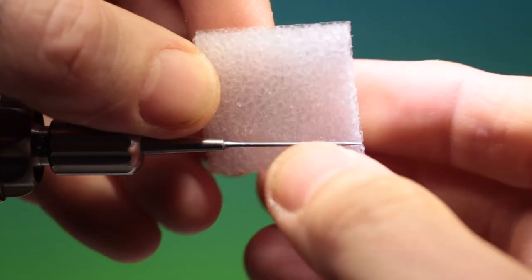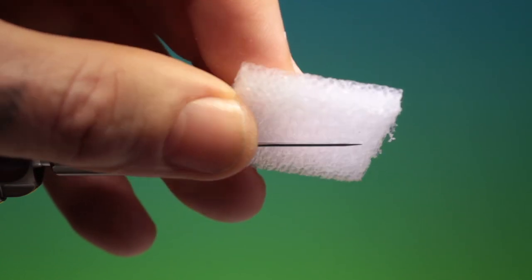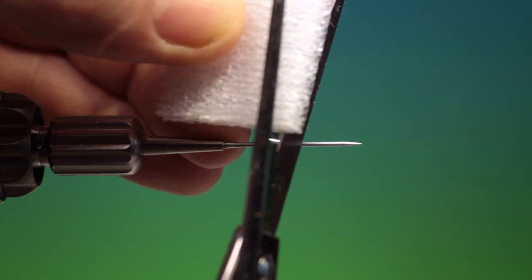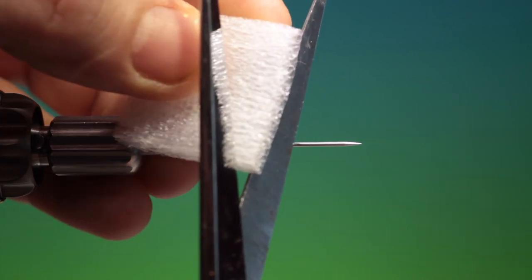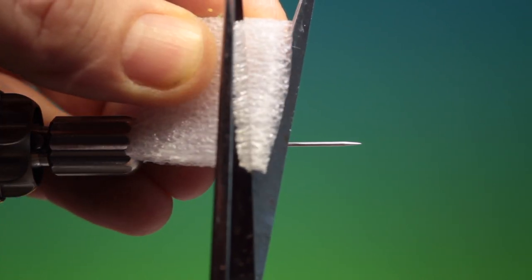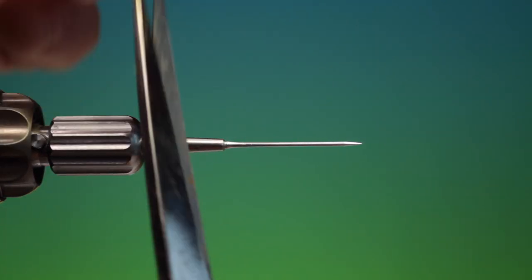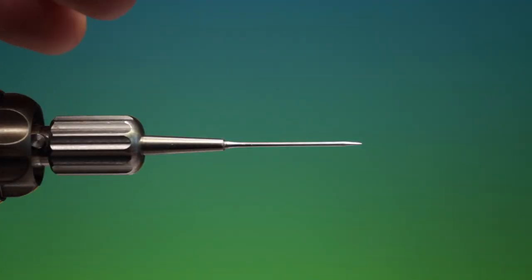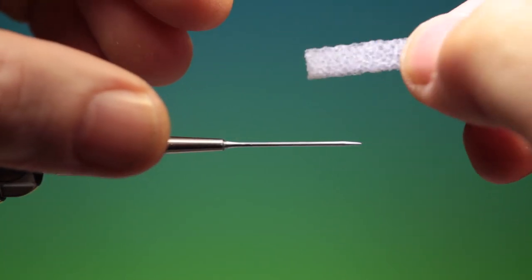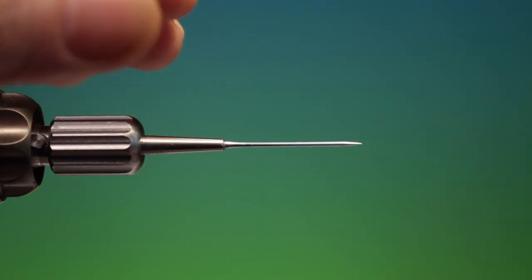So what we want is this open cell foam and all we do here is we cut at an angle a little piece so it tapers at one side and is thicker at the other, and then you cut it to length.